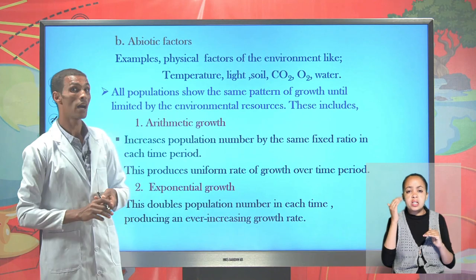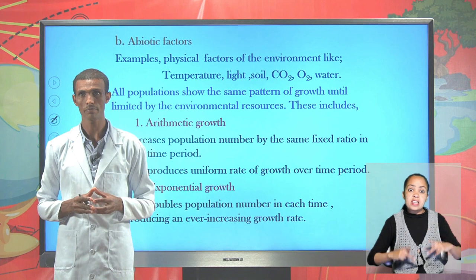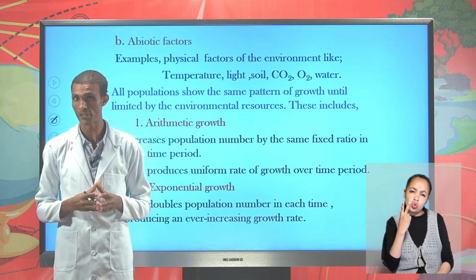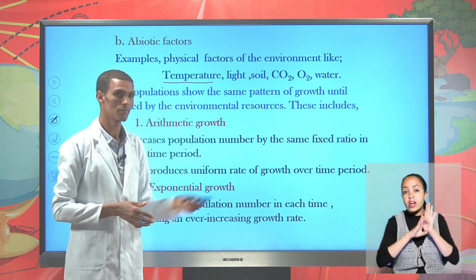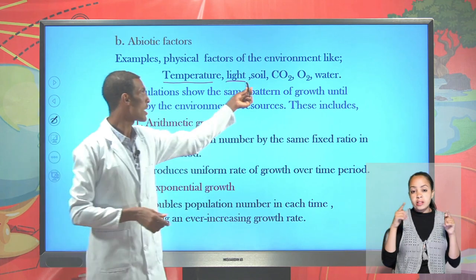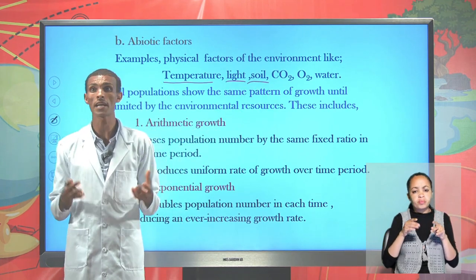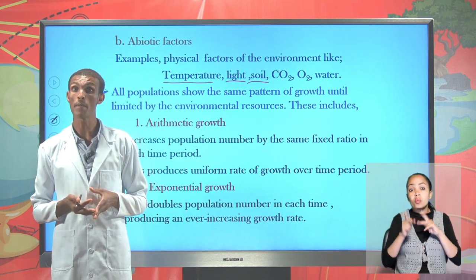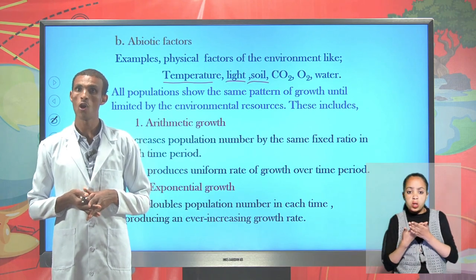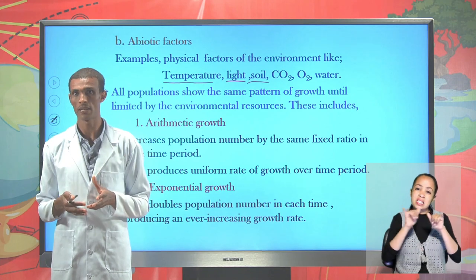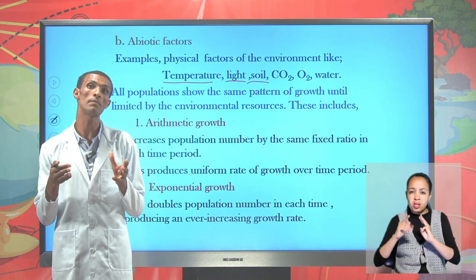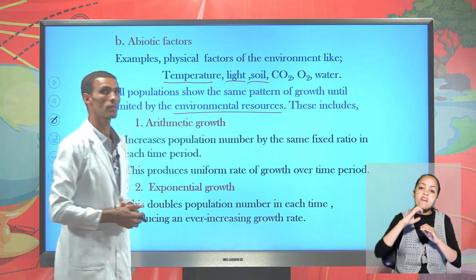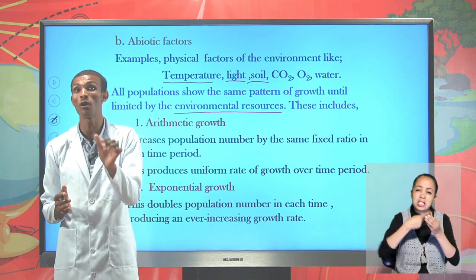Another factor is the abiotic factor, considered a physical factor — the effect of physical factors over population size. For example, the effect of temperature, light intensity, soil, carbon dioxide and oxygen concentration, and water availability over a population size. All populations can grow in the same pattern until growth is limited by environmental resources. No population can grow beyond environmental resources.